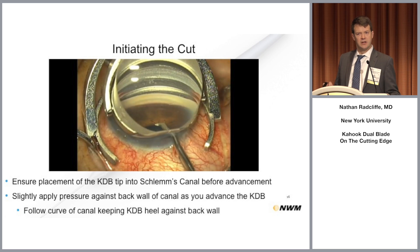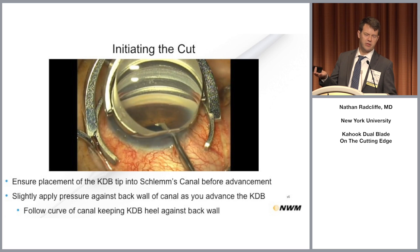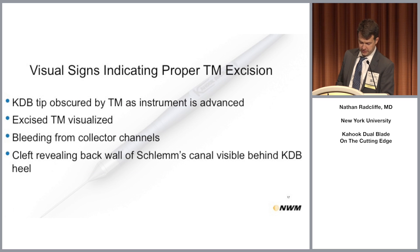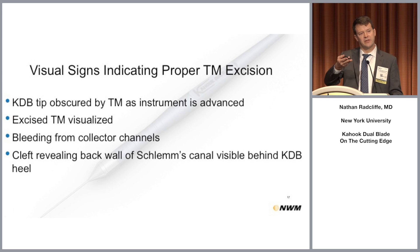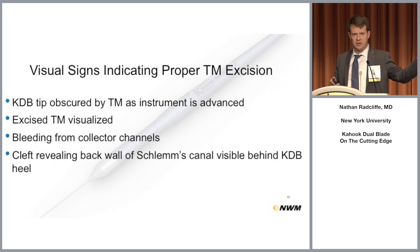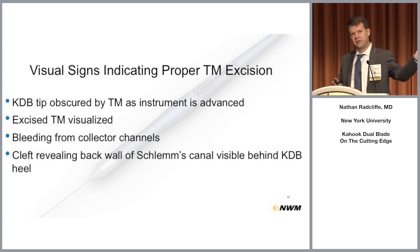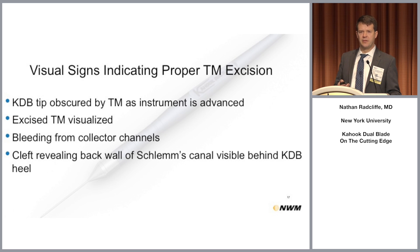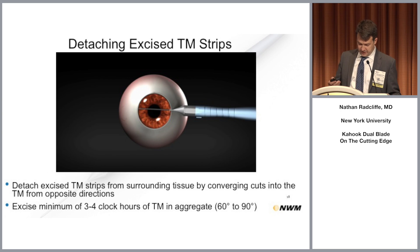If you have bleeding during the surgery, apply more viscoelastic and brush it out of the way — you'll also be raising the pressure, making reflux bleeding less likely. Once you've gone through one pass, you'll have a strip of trabecular meshwork. Come from the other angle a little further along, pierce the trabecular meshwork into the canal again, sweep across, and remove that final strip of trabecular meshwork. You don't always get the strip.